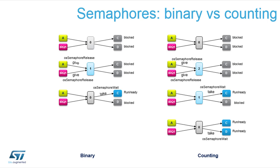This is also very useful when working with interrupts. Our TCP/IP stack is based on this mechanism. When you receive a packet, you get an interrupt, and this interrupt releases the semaphore. The task waiting for the packet within the TCP/IP reception loop will then take the semaphore and process the data. OS semaphore release gives the car to the parking lot, and OS semaphore wait takes the car and leaves the lot empty.